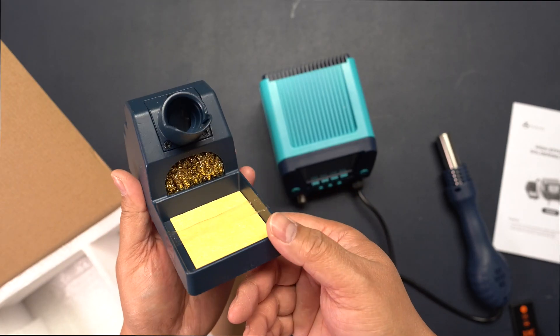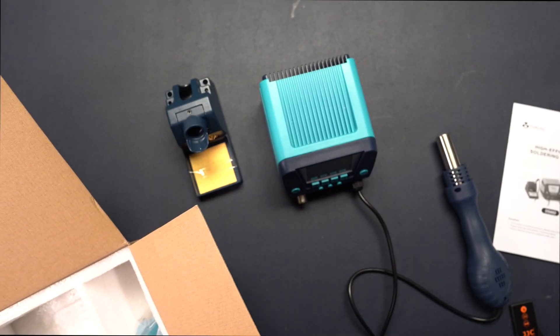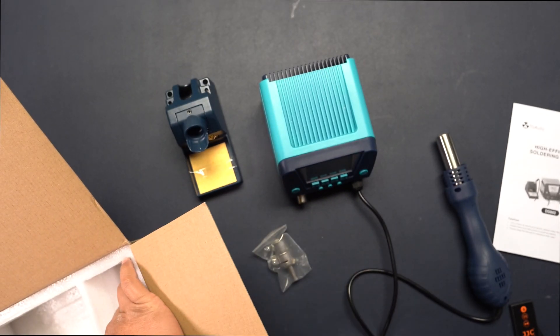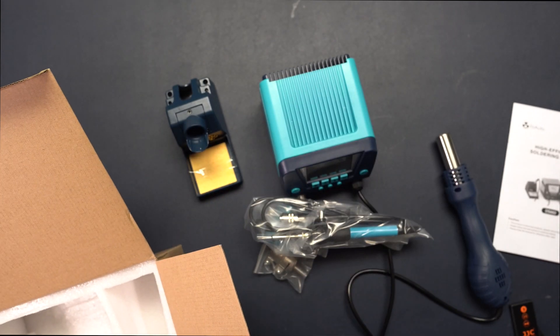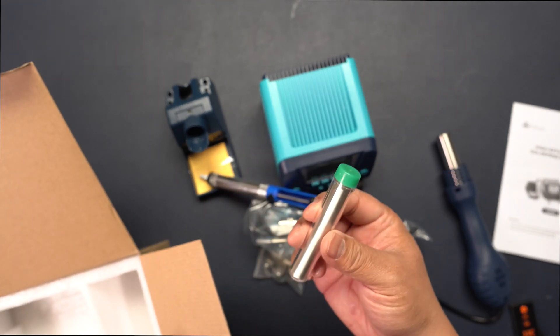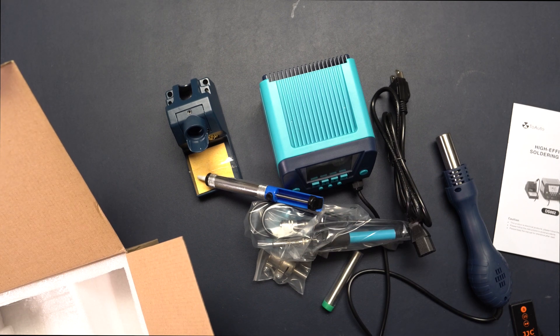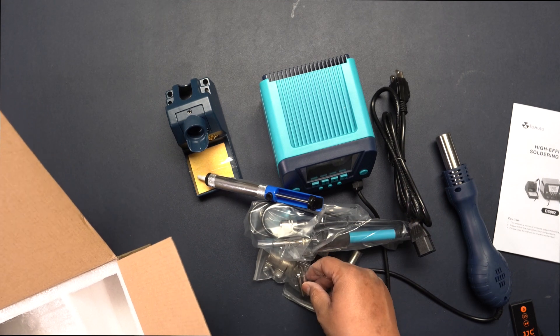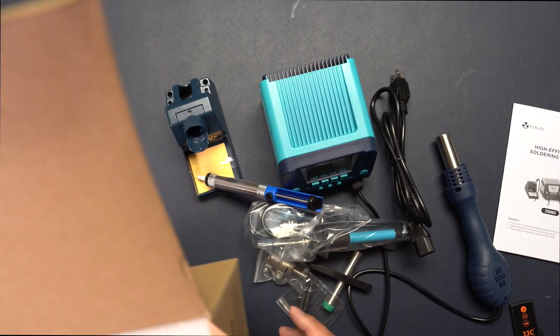Here is the soldering holder where you put your soldering gun. Here is the soldering gun itself. Some solder, some tips, tweezers, and that's it - that's the whole package.